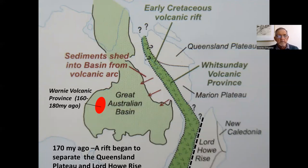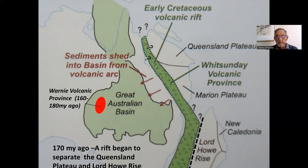An early Cretaceous volcanic rift developed in the Whitsunday Province — these are the youngest volcanic and intrusive rocks in Australia. This is related in a way to the separation of the Lord Howe Rise, which probably didn't occur until 80 or 100 million years ago.